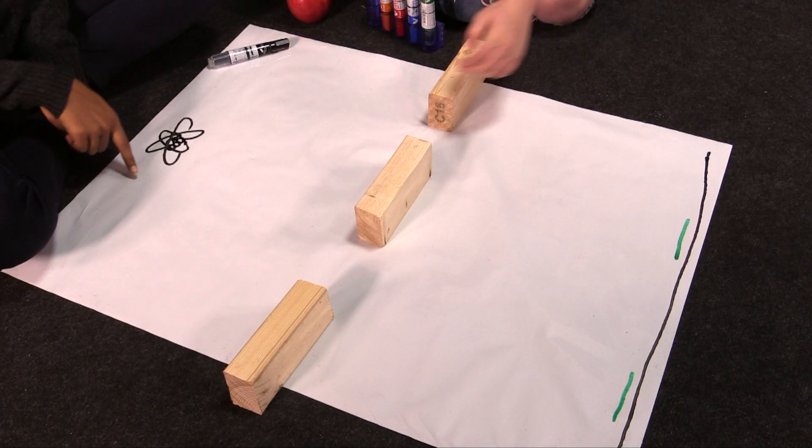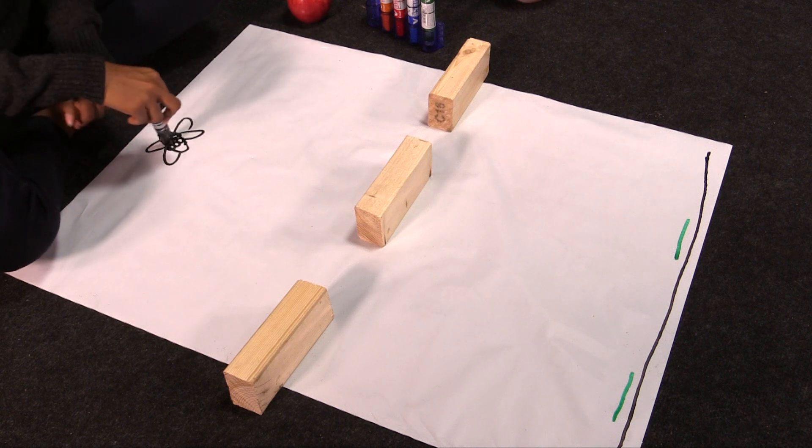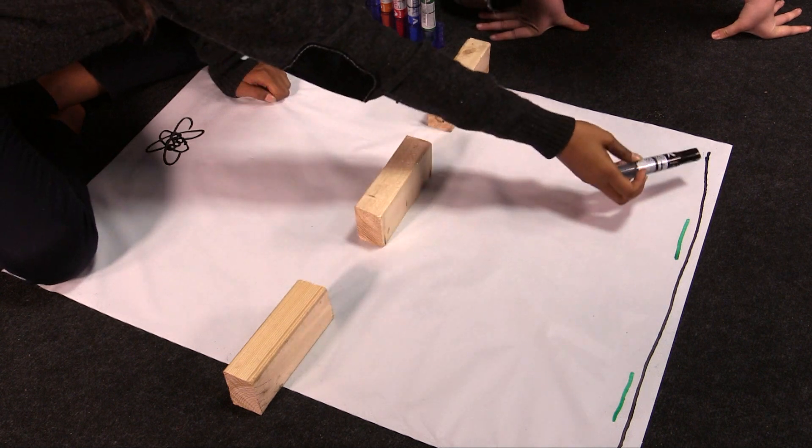They could end up anywhere. Yeah. Why do you think they could end up anywhere? Because it's so small. Yeah. But let's say we throw the atoms so that if they do get through, then they definitely will hit the wall somewhere. So they don't stop anywhere. But we're not going to be able to see where they end up, right? Because they're too small.